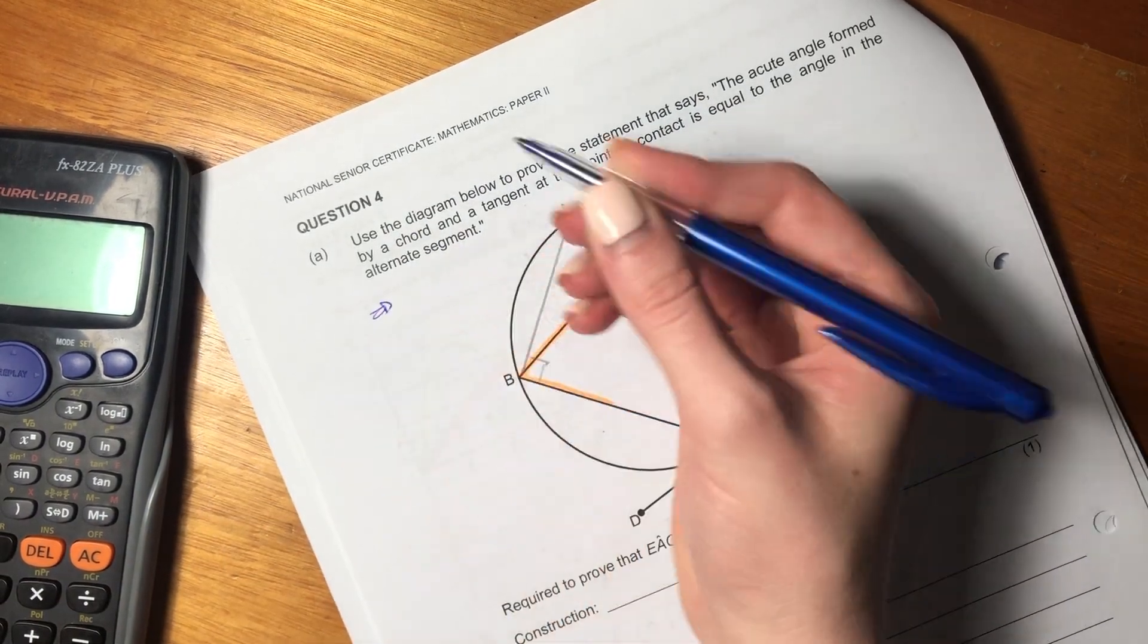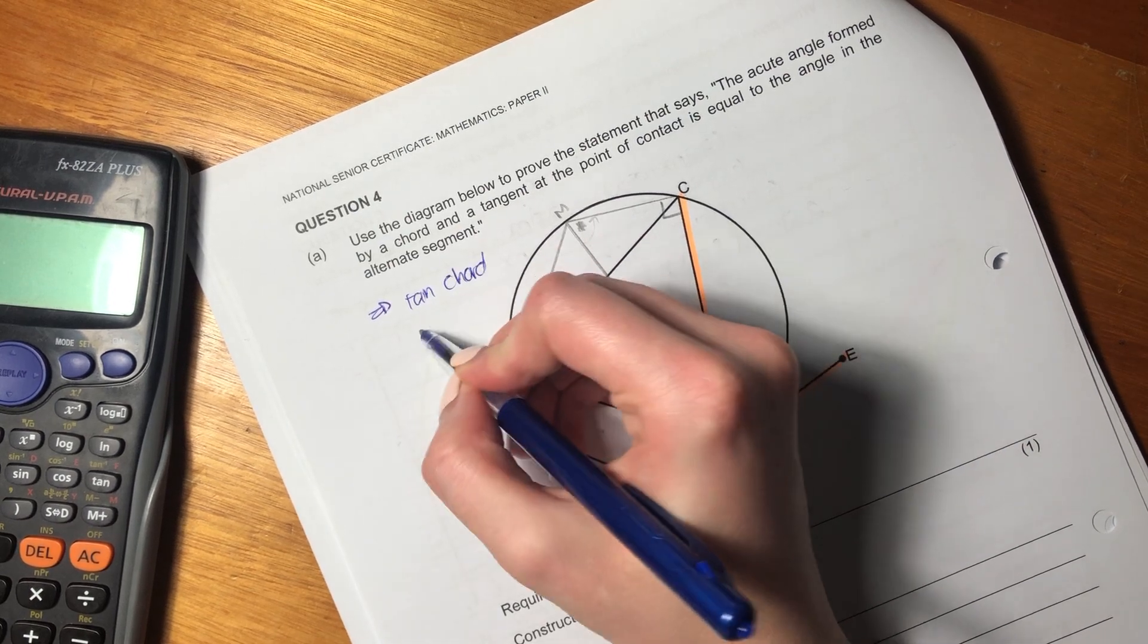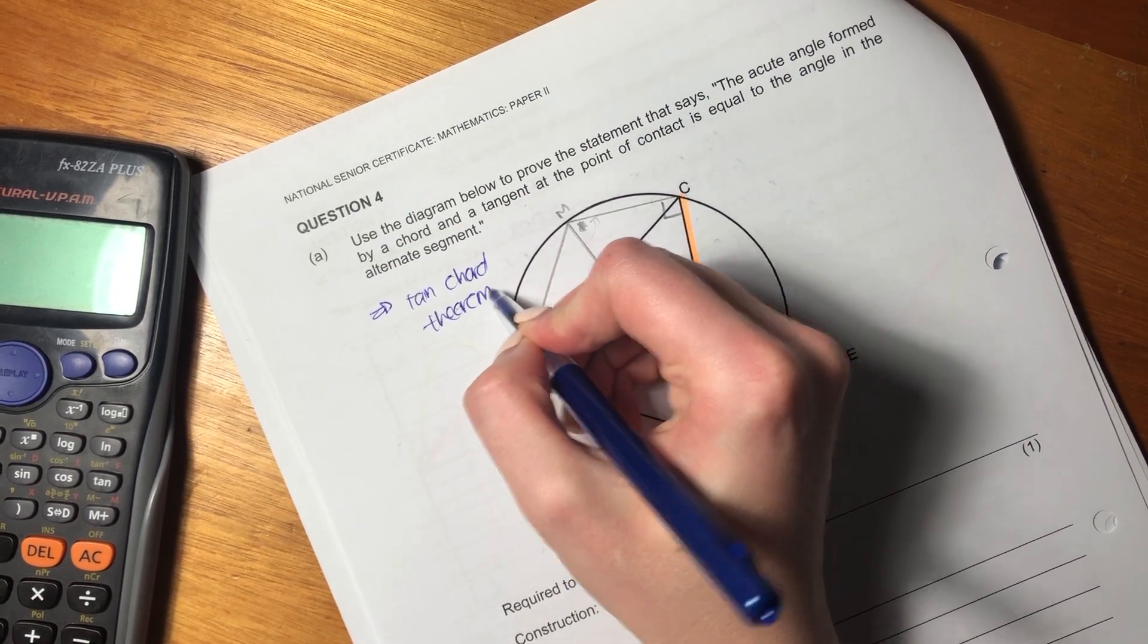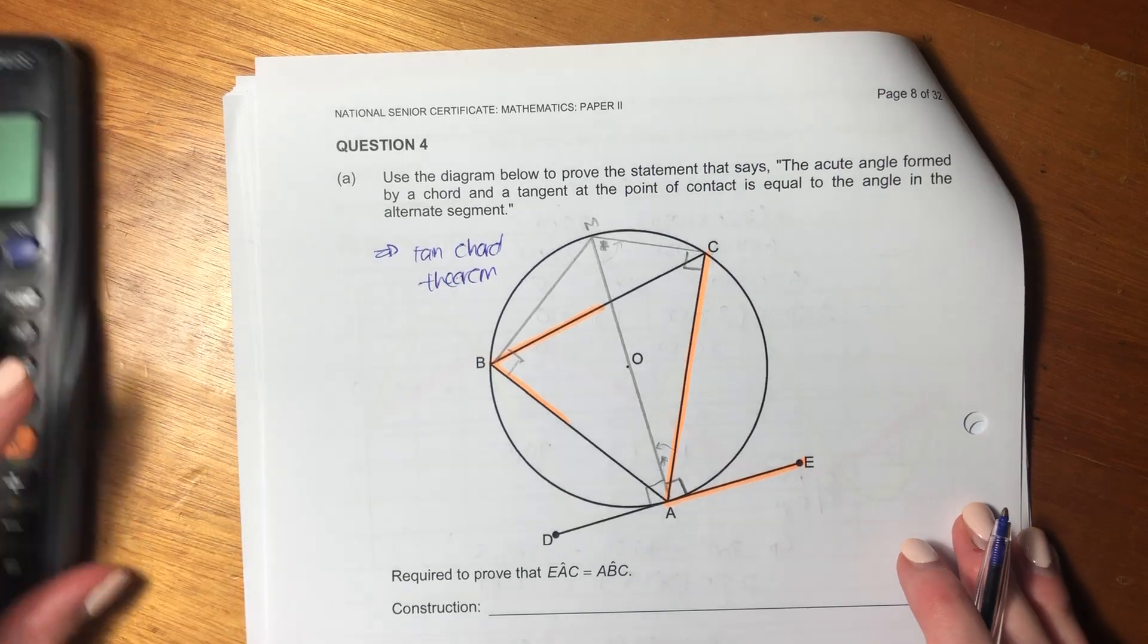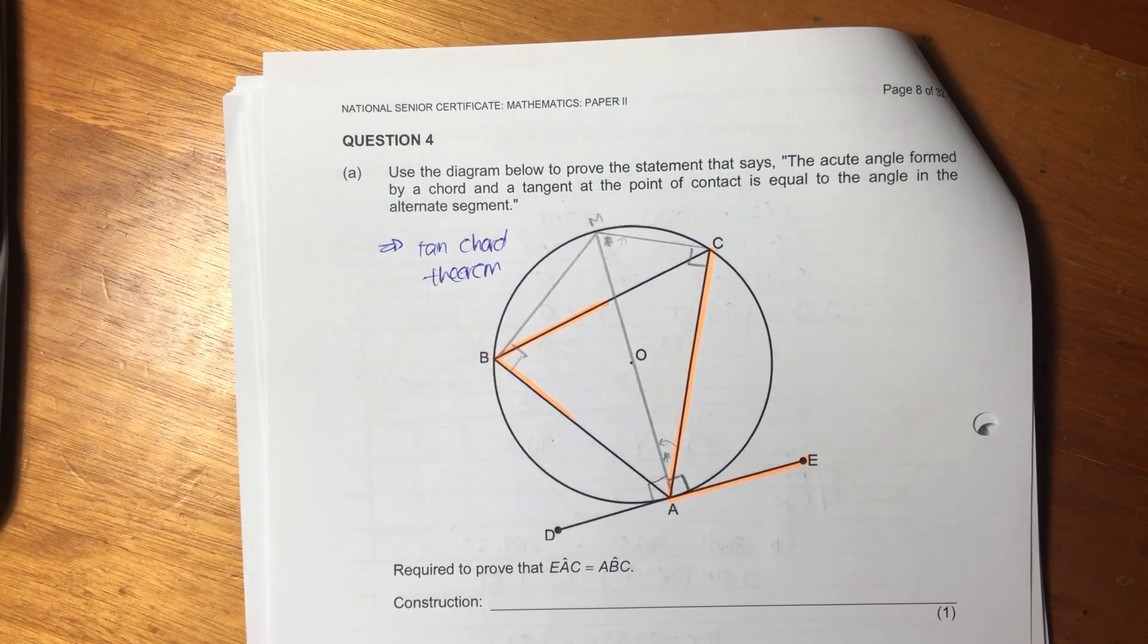Let's read what they want from us. Use the diagram below to prove the statement that follows. The acute angle formed by a chord and a tangent at the point of contact is equal to the angle in the alternate segment. So, basically, what they are asking us to prove is the tan-chord theorem.